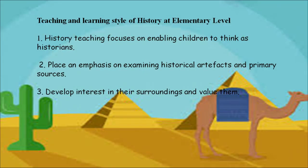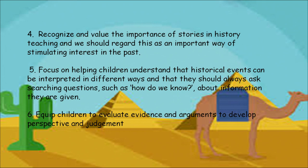Teaching and learning style of history at elementary level should focus on helping children think as historians, enabling them to think critically, and placing emphasis on examining historical artifacts and primary sources. It should develop interest in the surroundings and value them, recognize the importance of stories in history as a way of stimulating interest in the past, and help children understand that historical events can be interpreted in different ways. Children should always ask searching questions such as 'How do we know?' about information and events. We should equip children to evaluate evidence and arguments, develop perspective and judgment, and consider multiple aspects of any event.